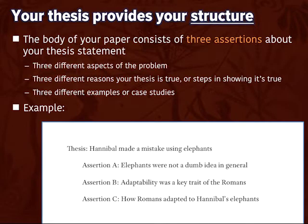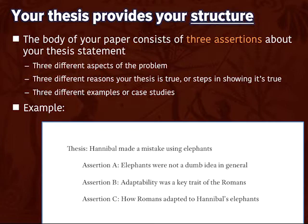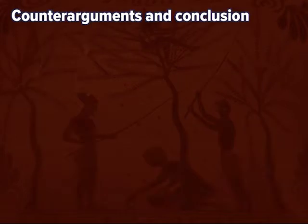In this example, 'Hannibal made a mistake' is the thesis, and the body of the paper is determined by three assertions that support it: A) that in general, elephants were not a bad idea and had been used successfully in the past; B) that adaptability was a key trait of the Romans; and C) that it was Roman adaptability — the fact that they adapted to the use of elephants — that ultimately made them ineffective in Hannibal's conquest of Italy.